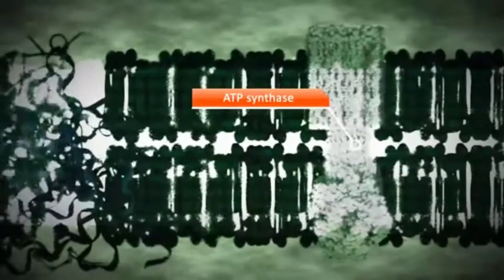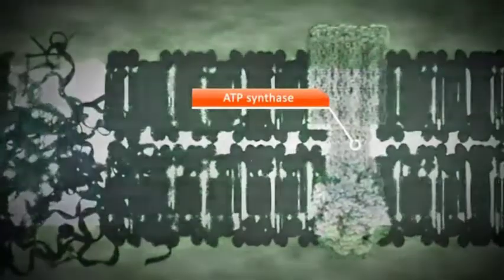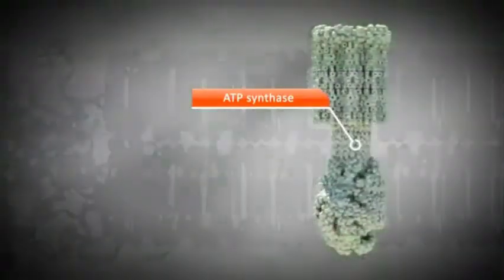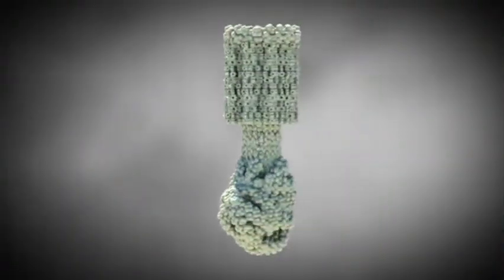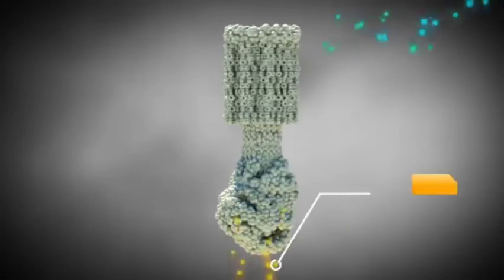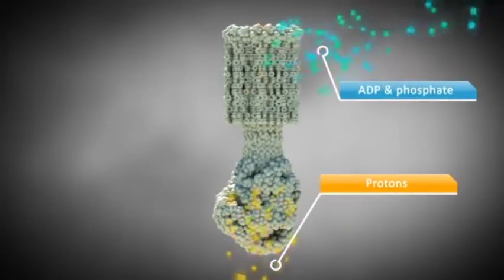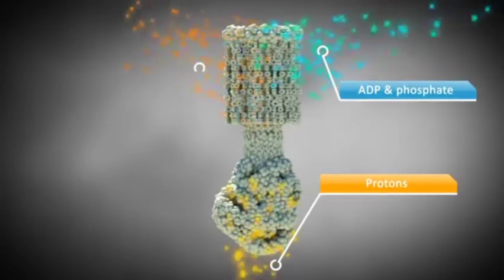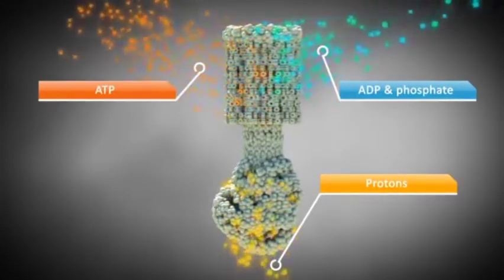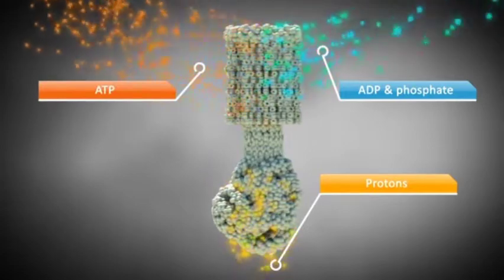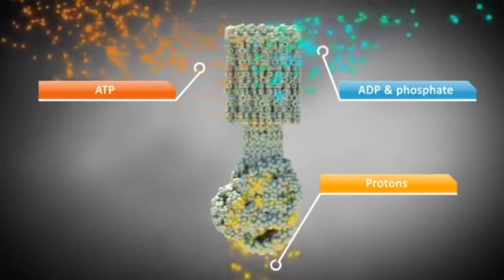Proton motive force drives ATP synthase, which produces ATP from ADP and a phosphate group. This process is called oxidative phosphorylation.